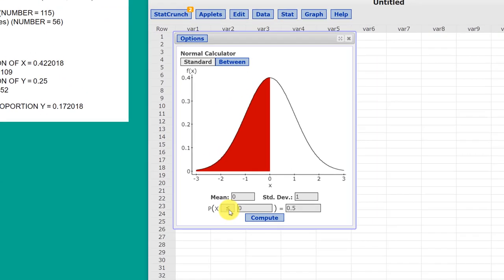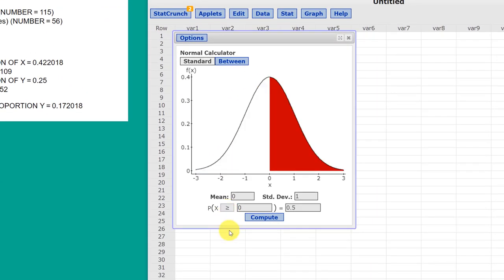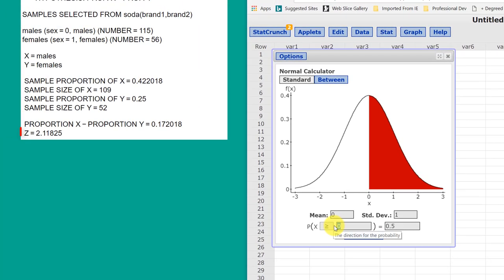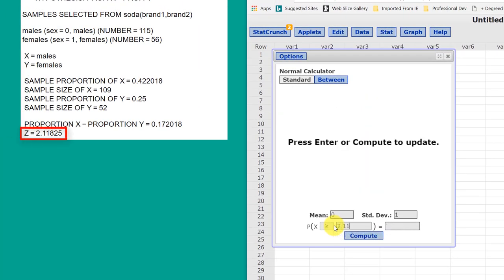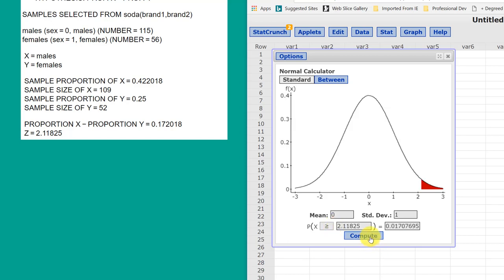In our calculator, we click the greater than symbol, which means we want a right-hand tail test. All we need to do is put in that Z value, 2.11825, and click Compute.